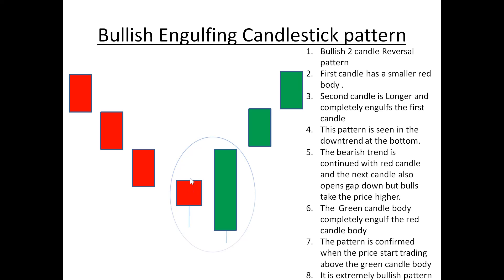The downtrend continues with this candle, and the next green candle also opens gap down, but the bulls become powerful — they come in strongly and take the price higher, forming the bullish engulfing candlestick pattern. This green candle completely engulfs the red candle.